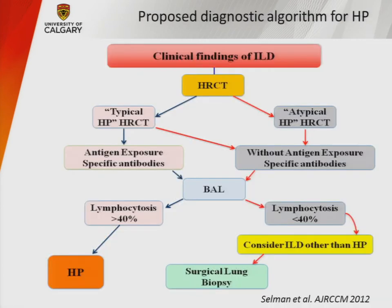A proposed diagnostic algorithm for HP from a 2012 Blue Journal paper starts with clinical findings of ILD and an HRCT. If atypical, without antigen exposure or specific antibodies, proceed to BAL; if no lymphocytosis, consider surgical lung biopsy. But if you have antigen exposure, lymphocytosis, and a typical HRCT, you can be pretty confident in the diagnosis.